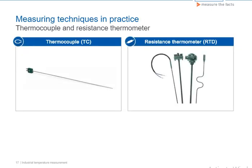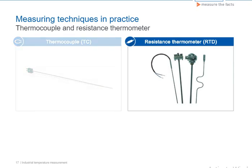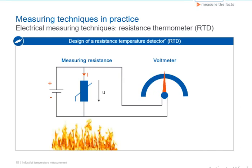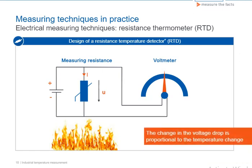Now that we've become acquainted with thermocouples as one of the most important measuring techniques in contact electrical temperature measuring technology, we can turn to a second widely used measuring technique, the resistance thermometer. The resistance thermometer, RTD, uses a measuring resistor to determine the temperature. An extremely low current I flows over a measuring resistor made of precisely defined material. If the temperature to which the measuring resistor is exposed changes, its overall resistance and also the measurable voltage drop U changes. The change in the measured voltage drop is proportional to the temperature change in the measuring resistor.